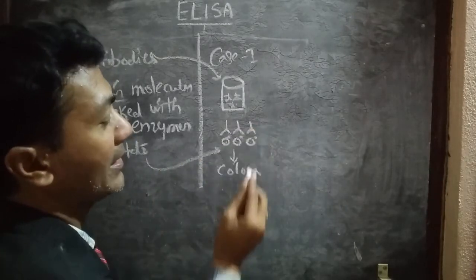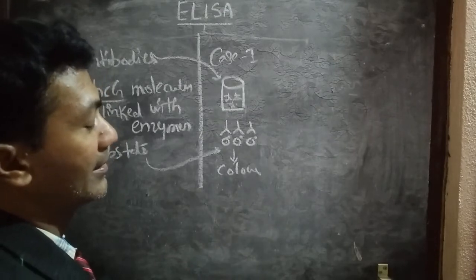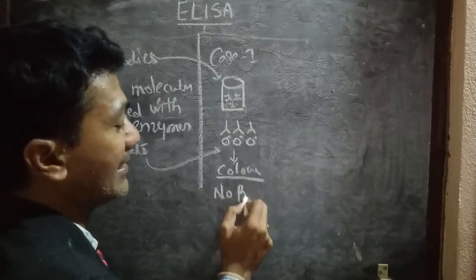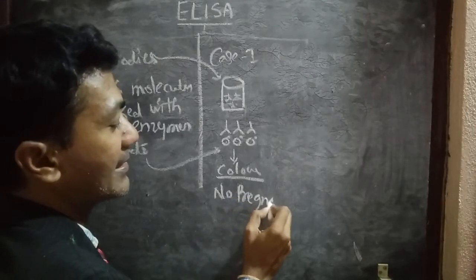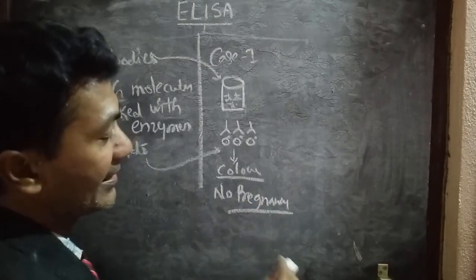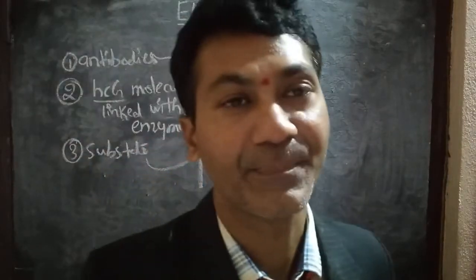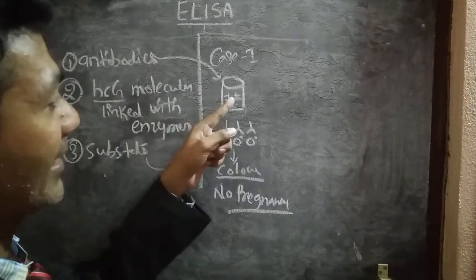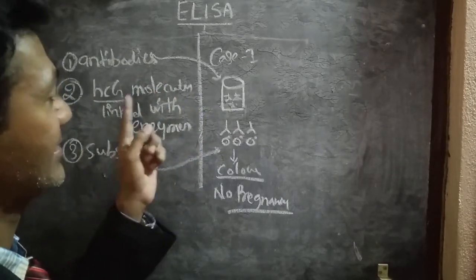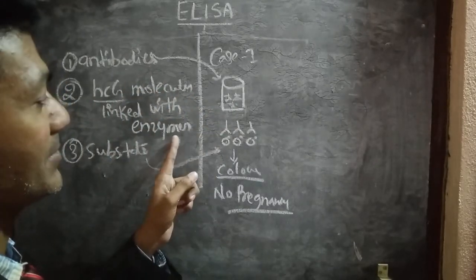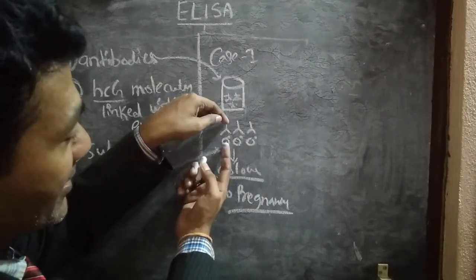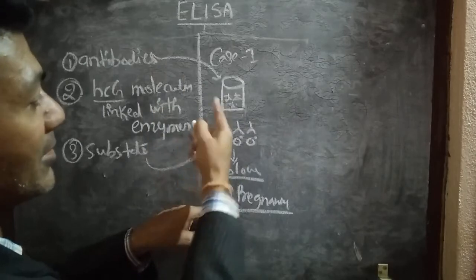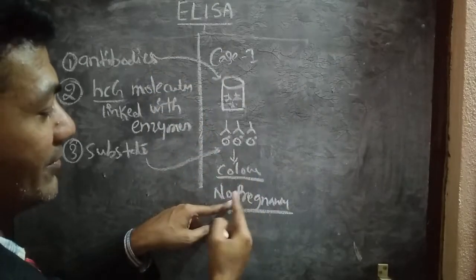This sample shows color, hence we can say no pregnancy. Color appearance indicates no pregnancy, because there are no natural HCG molecules present. What we added were antibodies and enzyme-linked HCG molecules. Because of the complex formed between these two, color appeared. Since there are no natural HCG molecules, the woman is not conceived — no pregnancy.